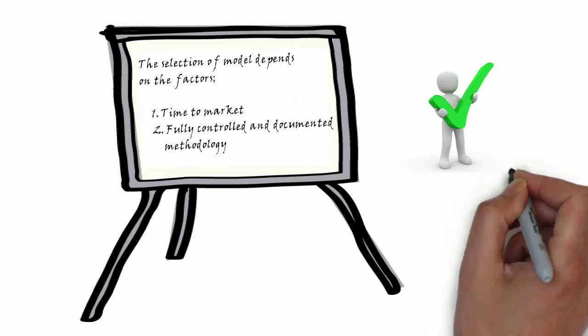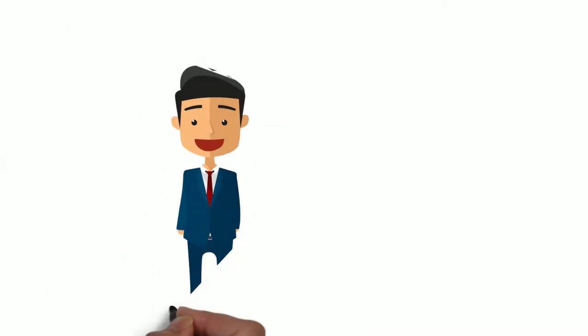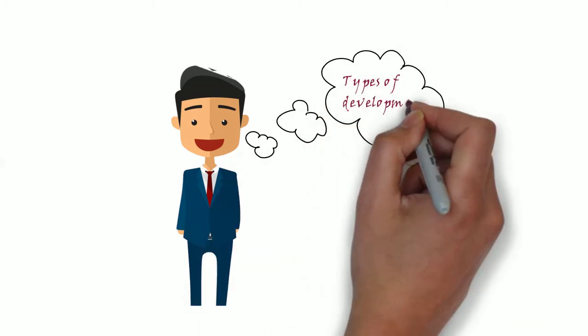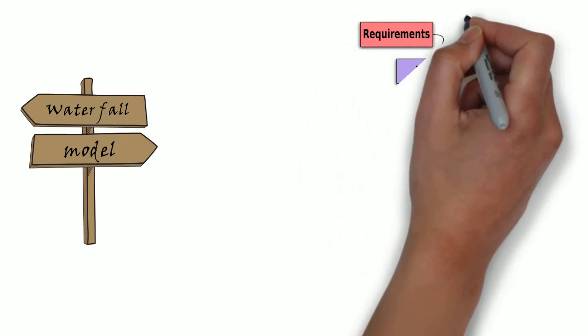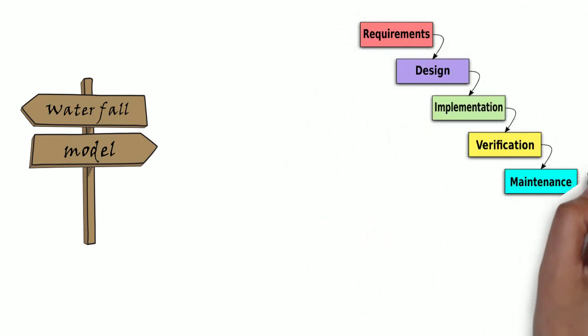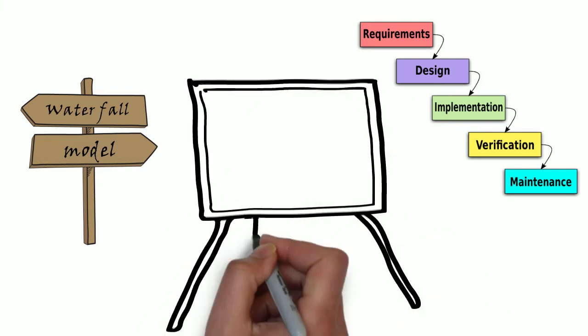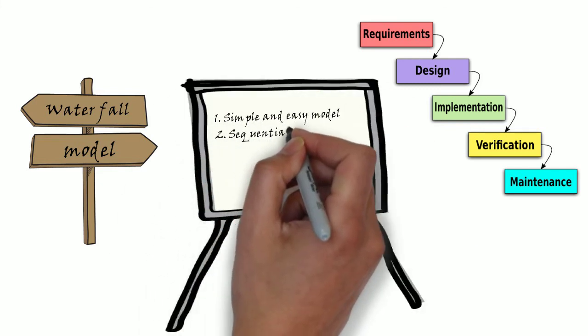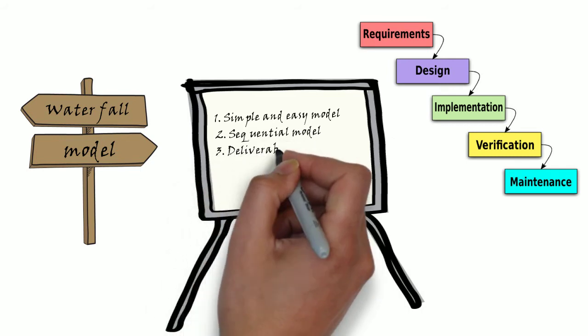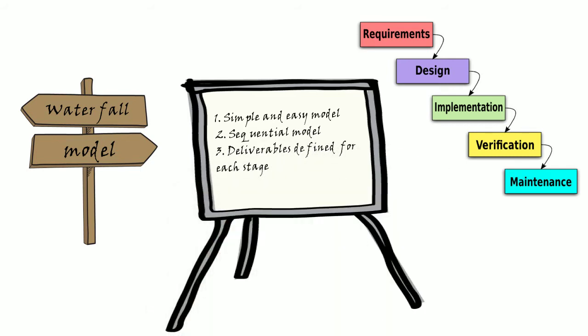Now let's start with the different types of software development models. We will discuss waterfall model first. Waterfall model is very simple and very easy to understand. As its name indicates, the next stage can be started only after completing the previous stage. Each stage has a set of deliverables.